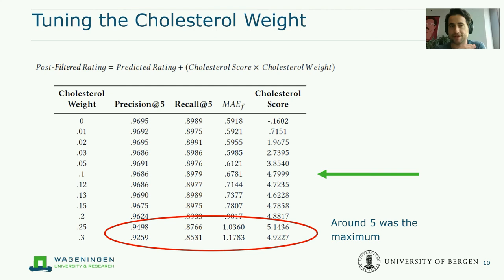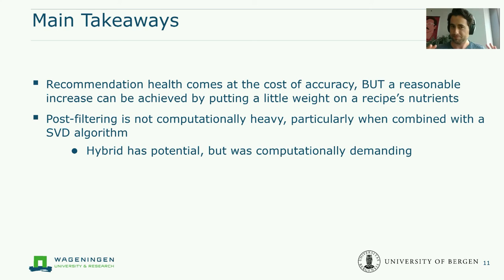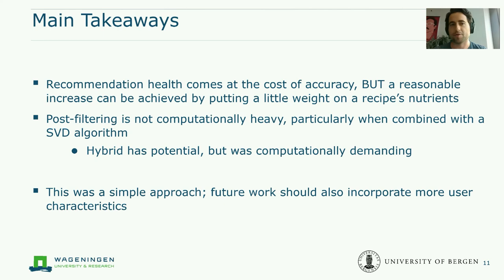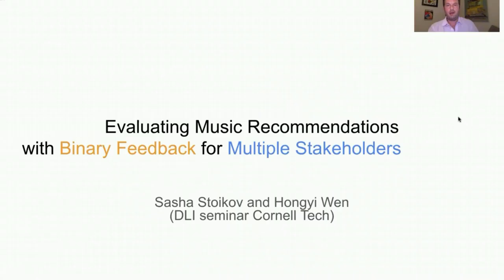It seems that around 10 to 15 percent cholesterol weight is optimal. The main takeaways are: recommendation health does come at a cost to accuracy, but you can already boost health by putting a small weight on specific nutrients without really diminishing accuracy. Post-filtering is also not computationally heavy, making it a straightforward approach to implement. In the future, it will be important to incorporate more user factors and user characteristics — including specific dietary constraints — into the recommendation approach. Here is a very healthy chocolate cake. Thank you for listening.